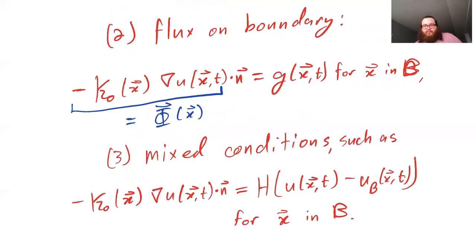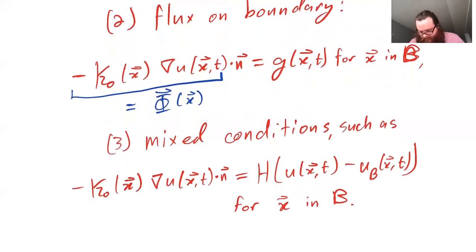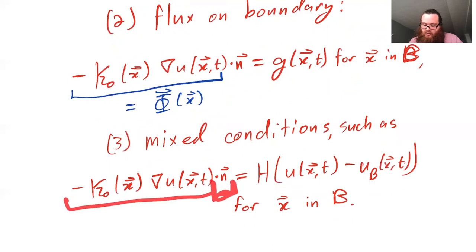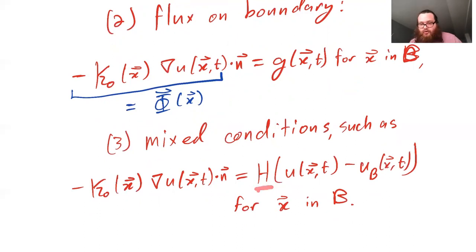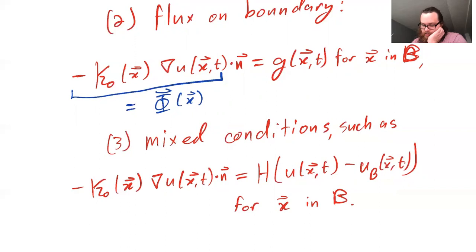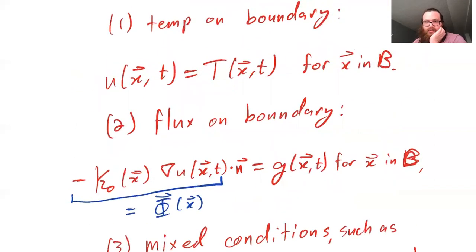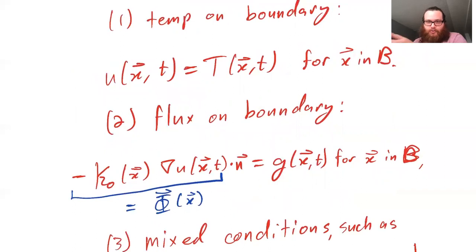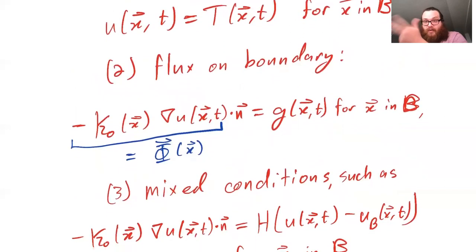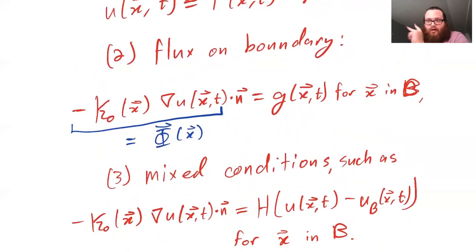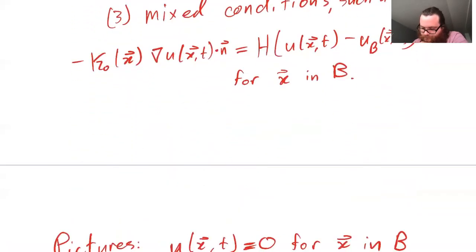We can also mix and match. As in the one-dimensional situation, we can have something where we say the flux on the boundary — how much heat or energy you're losing — is proportional to the difference in temperature between the temperature on the boundary and some baseline or prescribed temperature. These are essentially the same kinds of scenarios as the one-dimensional case: prescribing temperature, prescribing flux, or mixing the two.